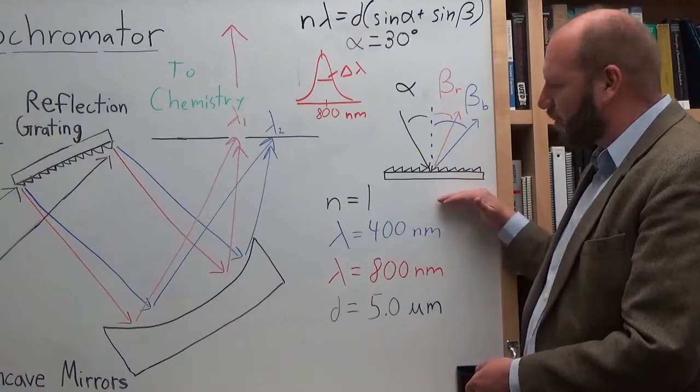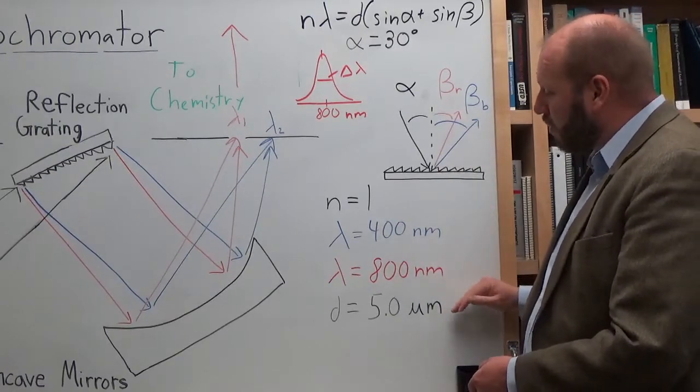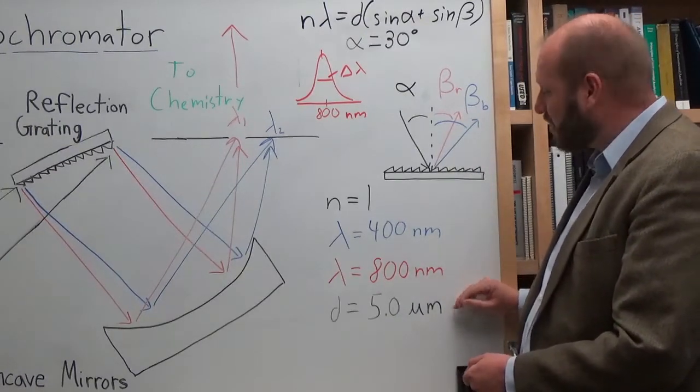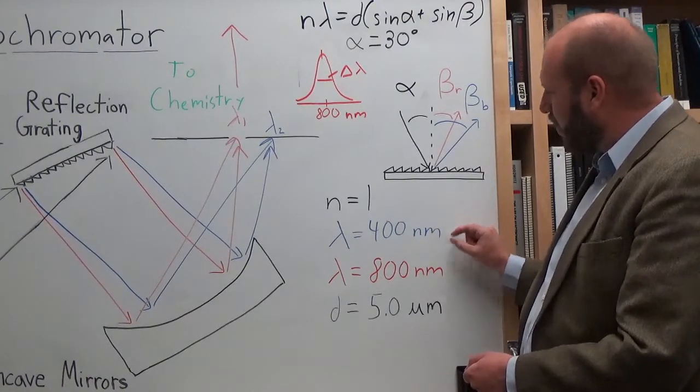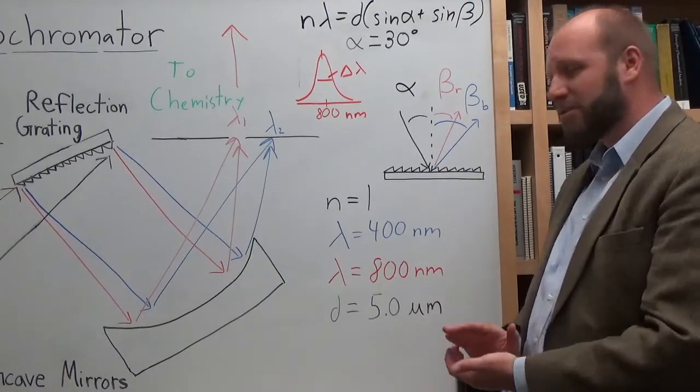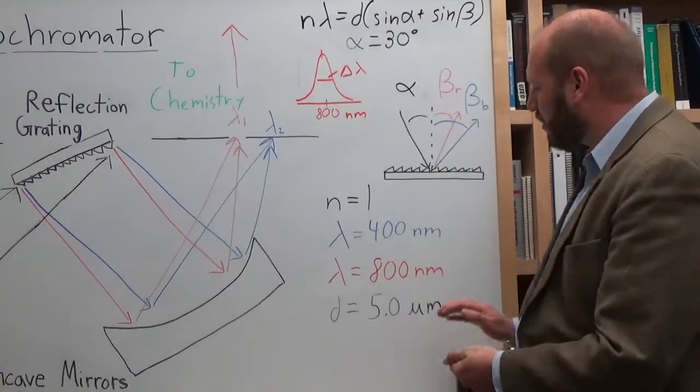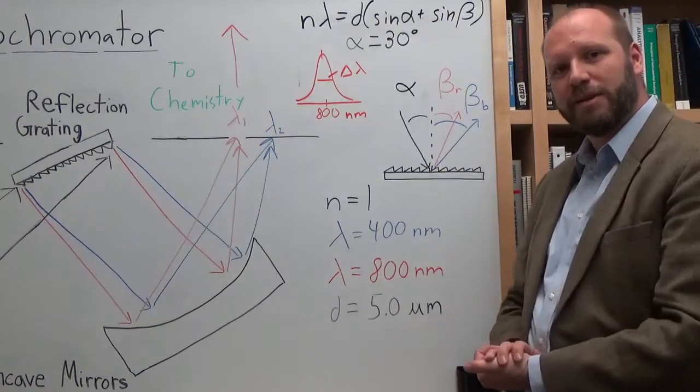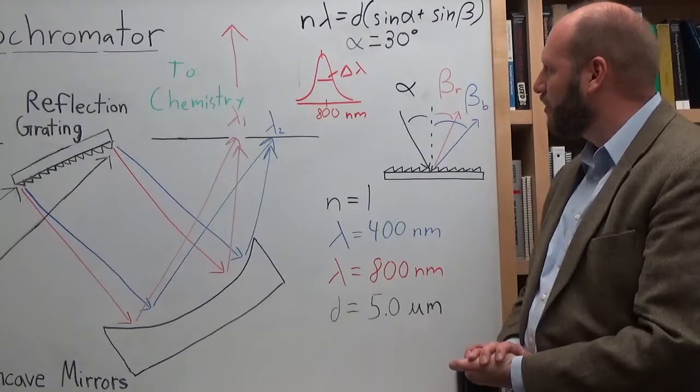Here for this example, if we look at the first diffraction order with spacing of 5 microns, you can solve and get the blue wavelength of 400 nanometers leaving at about 25 degrees, while the red will leave at about 20 degrees in terms of their angle that leaves.